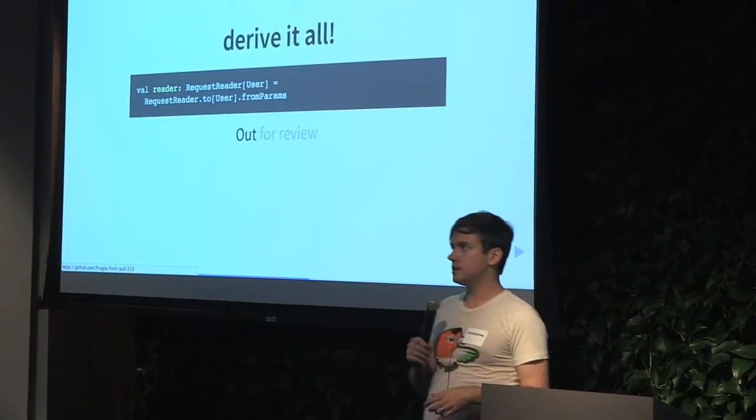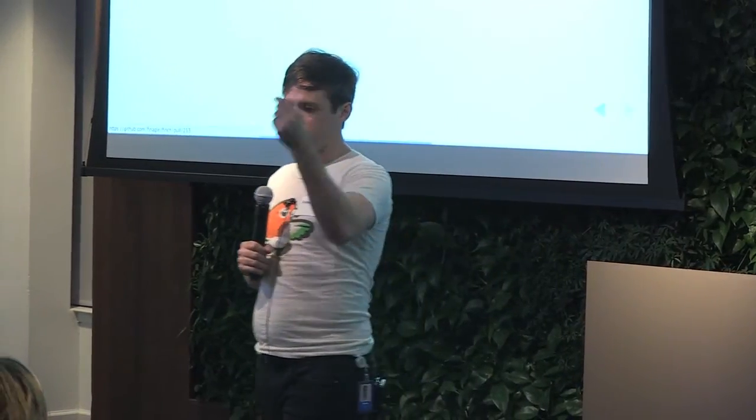This full derivation is not quite in the Shapeless branch yet. We're figuring out the API — the `.to[User].fromParams` syntax is necessary to work around the fact that we can't partially apply type parameters in Scala, but it's not too bad. It gives us a way to say, for example, `RequestReader[User].fromBody` or from some other piece of the HTTP request. We've taken a lot of code out of Finch and added a new dependency, but it's a dependency we trust — and it's a net deletion of a large amount of code.